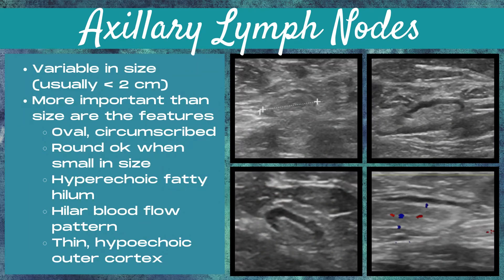The axillary lymph nodes are really variable in size, although they're usually less than two centimeters, but more importantly than their size are the features. Like other lymph nodes, we want them to be oval and circumscribed — it's okay if they're round when they're small. We want to see a nice bright hyperechoic fatty hilum, a hilar blood flow pattern, and a thin hypoechoic outer cortex.